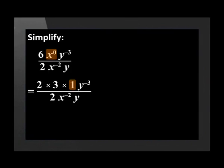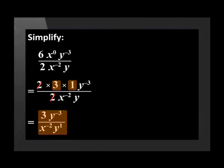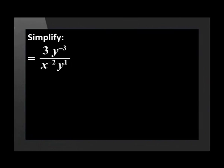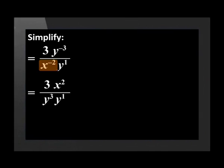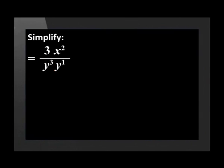The y in the denominator has a power of one. The two in the numerator will cancel with the two in the denominator; one times three equals three. We now have the fraction three times y to the power of negative three over x to the negative two times y to the power of one. Now let's work with the negative exponents: y to the power of negative three moves to the denominator and becomes y to the power of three; x to the power of negative two moves to the numerator and becomes x to the power of two. So we get three x squared in the numerator and y cubed times y in the denominator.